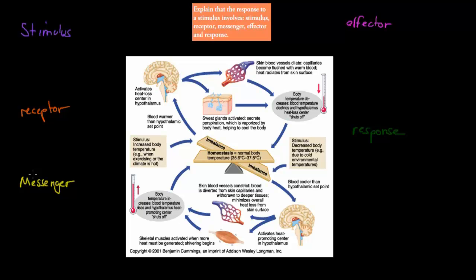There are five steps that you need to know. The learning outcome says to explain that the response to a stimulus involves the stimulus, receptor, messenger, effector, and the response. You need to be able to explain how a response happens due to these five things.